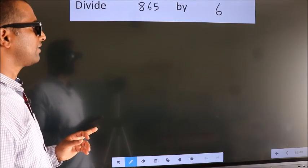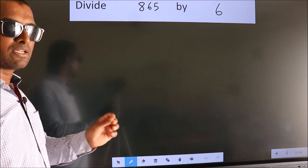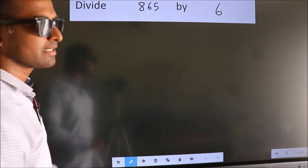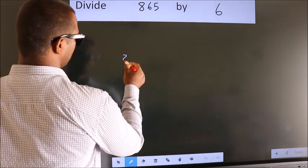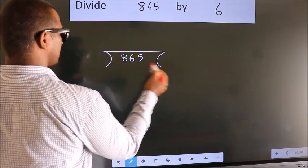Divide 865 by 6. To do this division, we should frame it in this way. 865 here, 6 here.